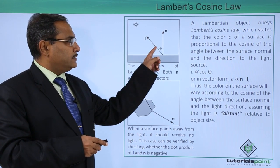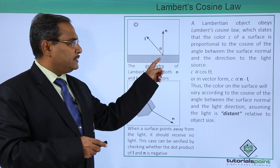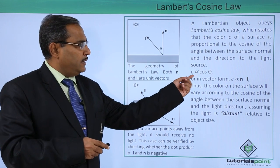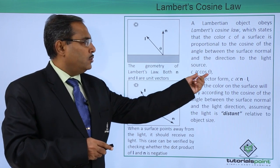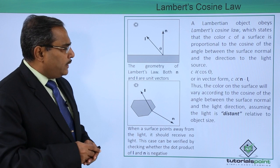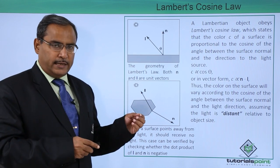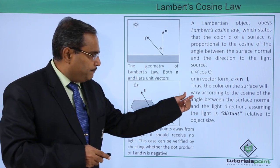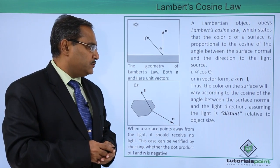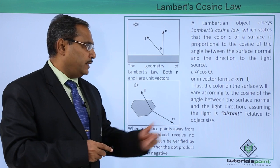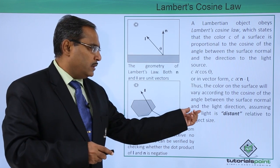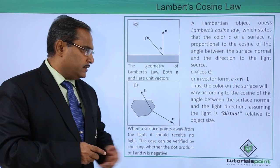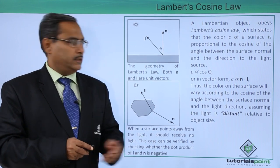The color of this surface will be directly proportional to the cosine. We have c as the color, and it is directly proportional to cos(θ), or in vector form, c is directly proportional to n dot i. Thus, the color of the surface will vary according to the cosine of the angle between the surface normal and the light direction, assuming the light is distant relative to the object size.